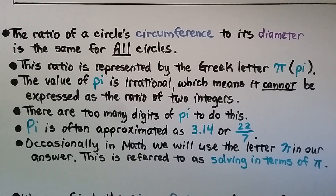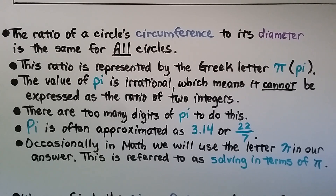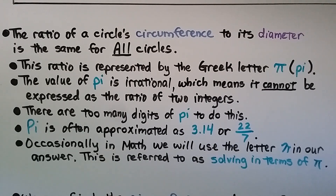The ratio of a circle's circumference to its diameter is the same for all circles, and this ratio is represented by the Greek letter pi. The value of pi is irrational, which means it cannot be expressed as a ratio of two integers. Pi is often approximated as 3.14 or the fraction 22 sevenths. Occasionally in math, we use the letter pi in our answer — this is referred to as solving in terms of pi.